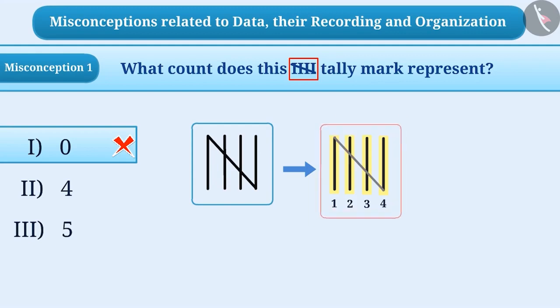As there are four straight lines in the tally mark as shown, and there is a slant line on the lines, they count this sign as four. That is, they choose the second option, and this is also the wrong answer.